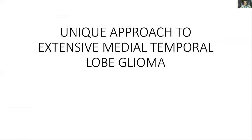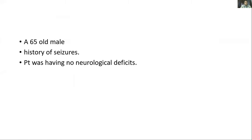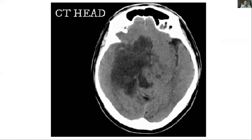Good evening everyone. I'll be presenting about a unique approach which we applied in our case when I was in Bandhani Hospital for my fellowship. A 65-year-old male presented with seizures and no neurological deficits. CT scan was suggestive of an extensive lesion — a hypodense area in the right temporal lobe extending to the suprasellar as well as infratentorial region. The brainstem was also rotated medially as well as posteriorly.